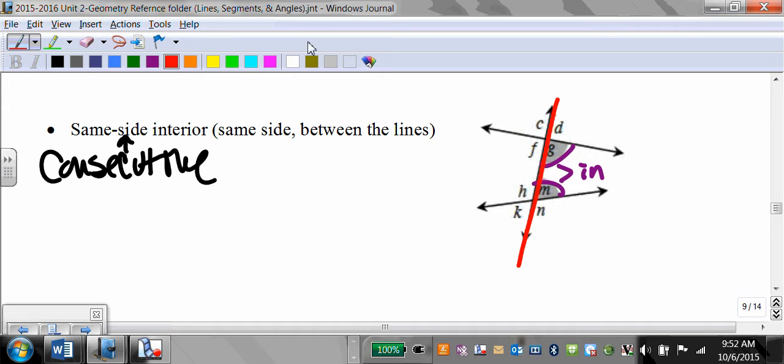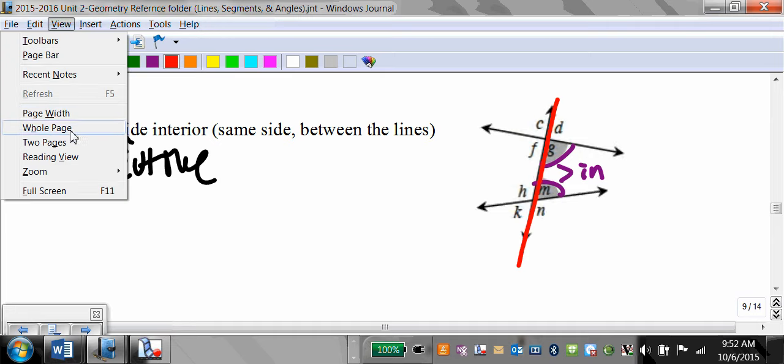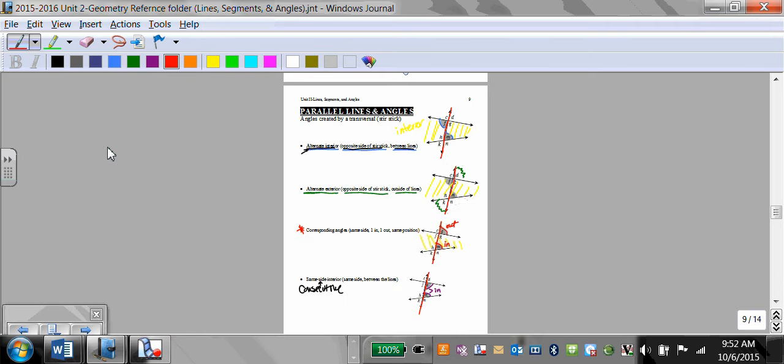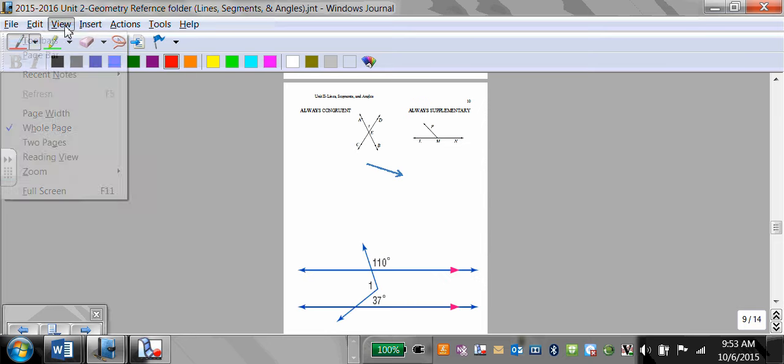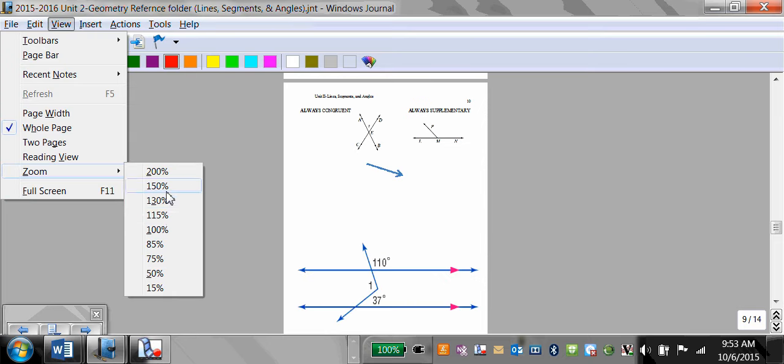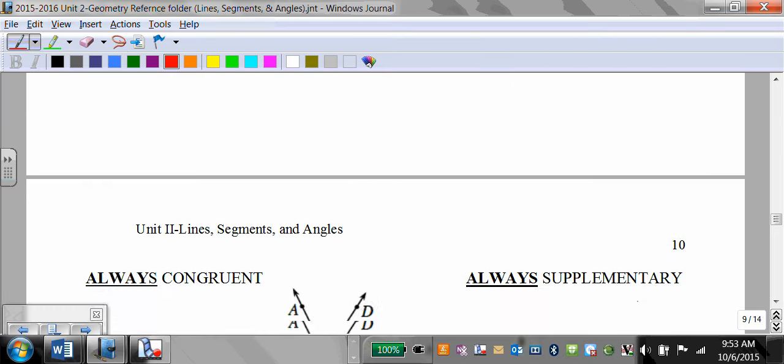It's really important you understand that these positional terms work when lines are not parallel. You can see here, none of these are parallel, but we still use these terms. But when lines become parallel, all of these suddenly become a very specific relationship. And it helps you find a bunch of stuff.